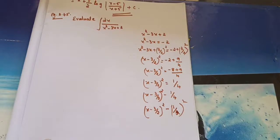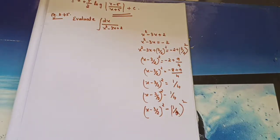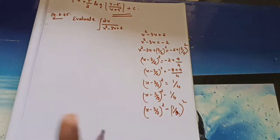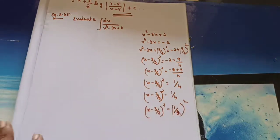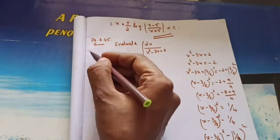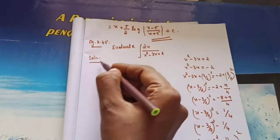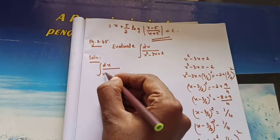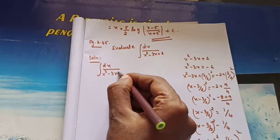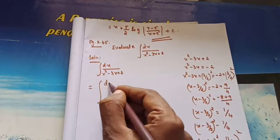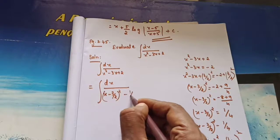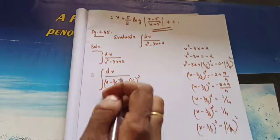So now we substitute this value. Solution: integral of dx divided by (x² minus 3x plus 2) equals integral of dx divided by [(x minus 3/2)² minus (1/2)²]. We will use the formula for dx/(x² minus a²).